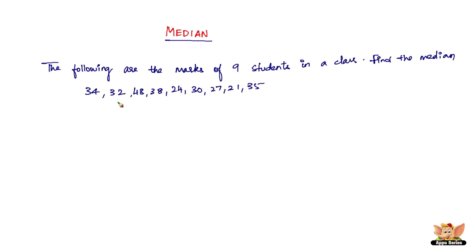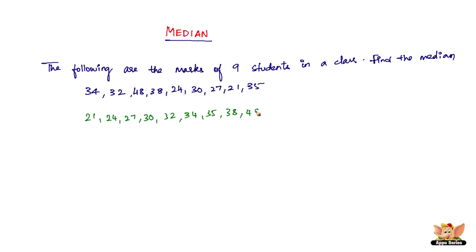What we do is we first arrange the given things in ascending order. You arrange it like: first it's 21, 24, 27, 30, 32, 34, 35, 38, 48.